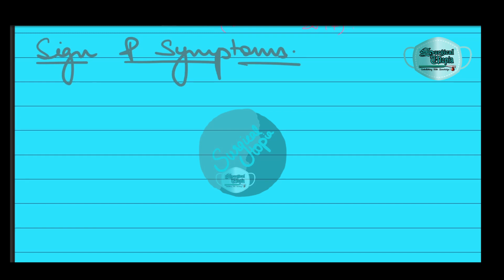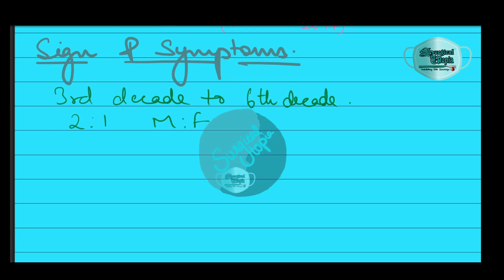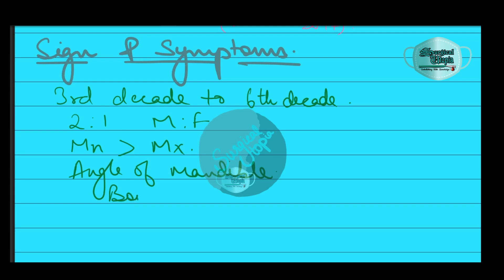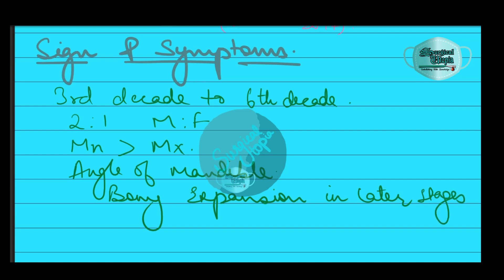Odontogenic keratocyst can occur at any age and most commonly occurs from the third to the sixth decade of life. The male to female ratio is 2:1. The majority of lesions are found in the mandible, with most cases occurring in the angle of the mandible region. The cyst shows no symptoms in the early stage.